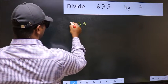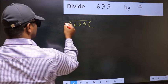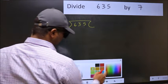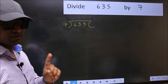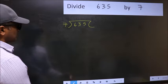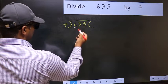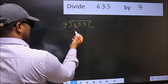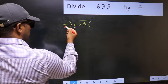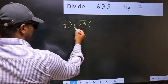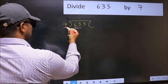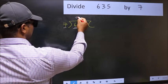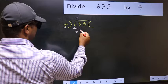635 and 7 here. This is your step 1. Next, here we have 6 and here 7. 6 is smaller than 7, so we should take two numbers: 63. When do we get 63 in 7 table? 7 nines, 63.